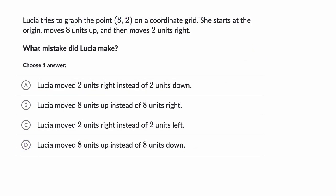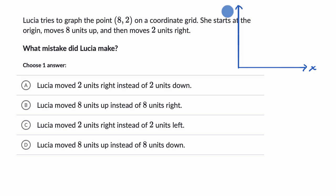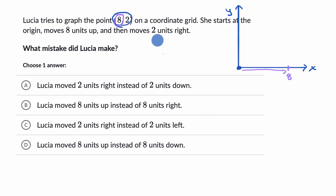Let's do another example. We're told that Lucia tries to graph the point on a coordinate grid. She starts at the origin, moves eight units up, and then moves two units to the right. Let me think about how I would do that. If that is my x-axis and this is my y-axis, that's my origin. If I had to deal with eight comma two, the first coordinate — the eight — is the x-coordinate; it tells you how much to move to the right, so I would move eight to the right. The second coordinate is the y, telling how much to move up, so I'd move two up to get to this point. Eight to the right and then two up.